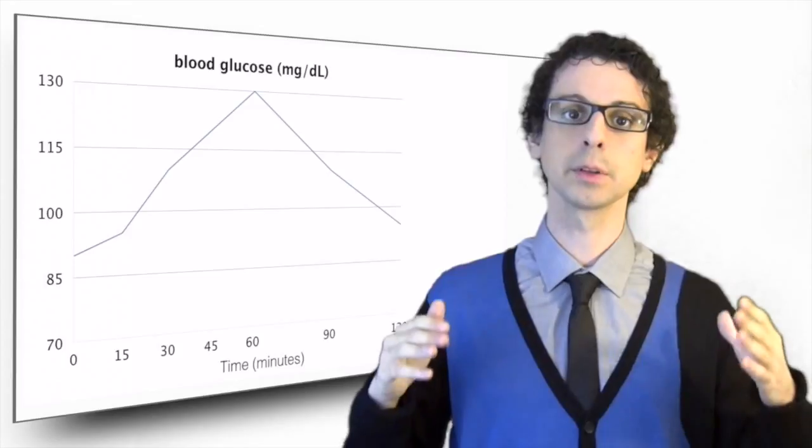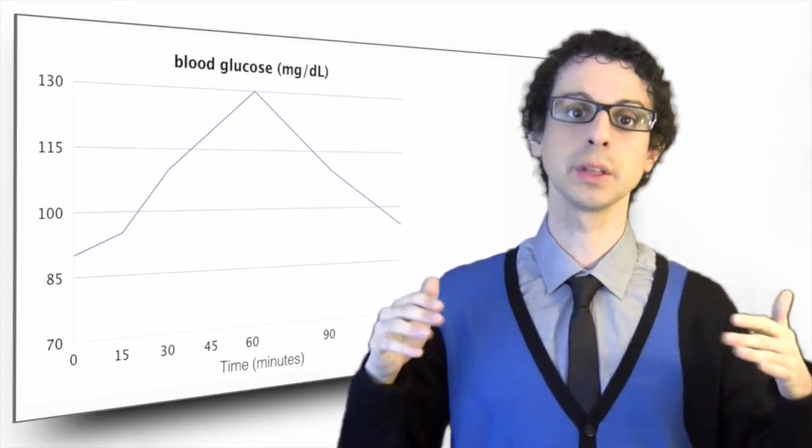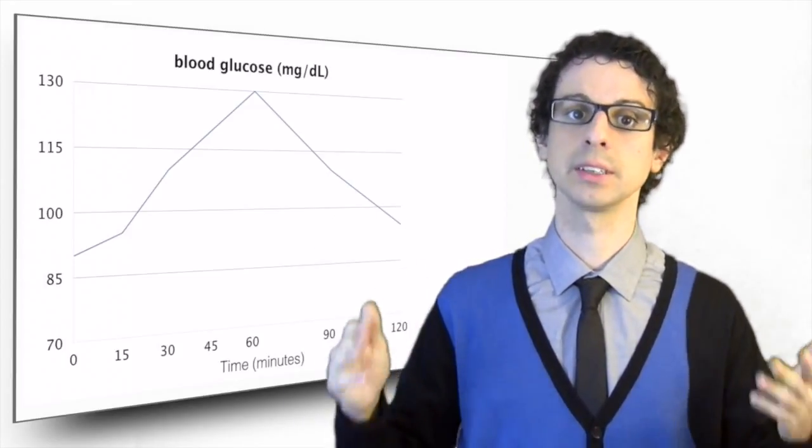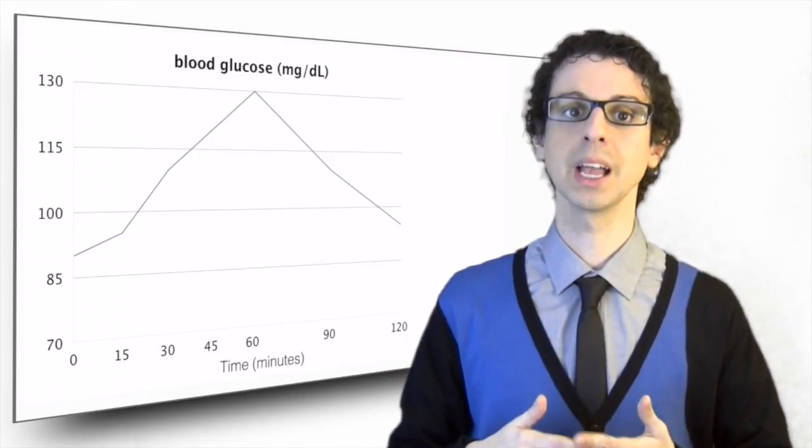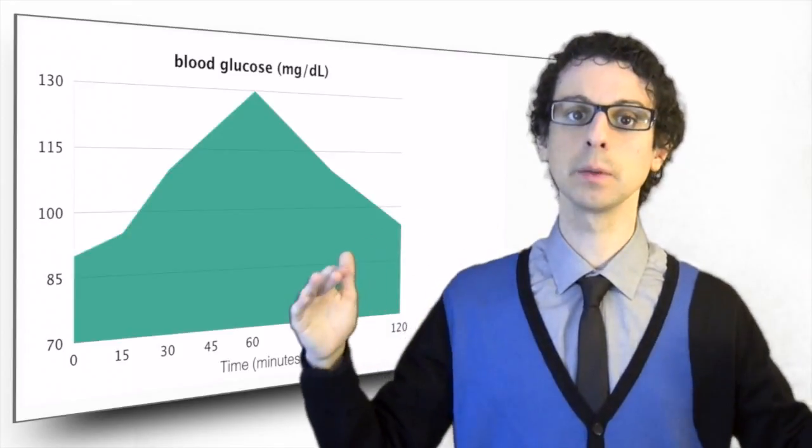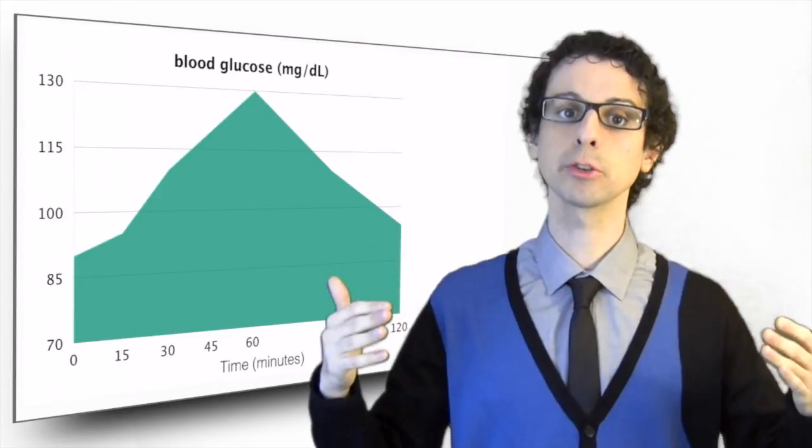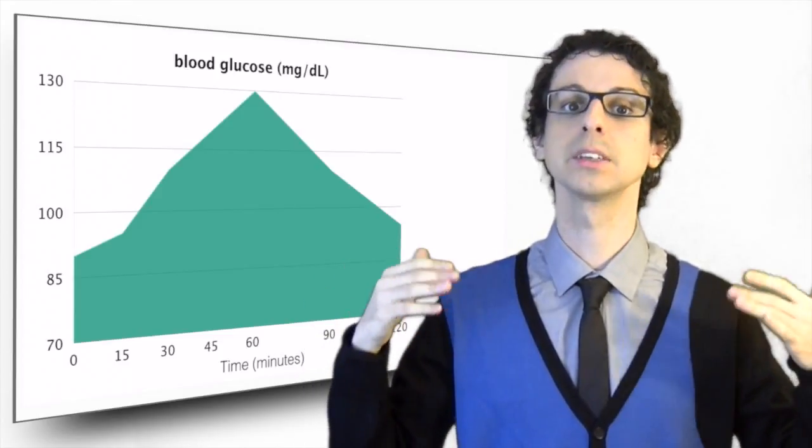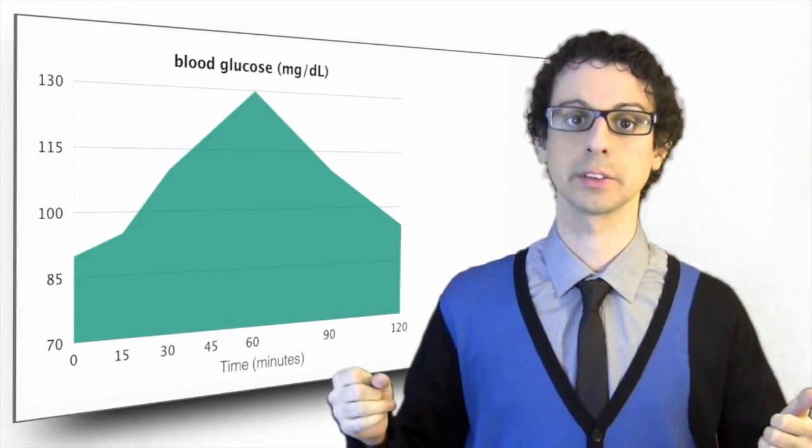In this example, you see that blood glucose peaks between 30 minutes and one hour, and after two hours is almost back to baseline. If you measure the area below this curve, you know it's proportional to the amount of glucose that was in the bloodstream during these two hours.